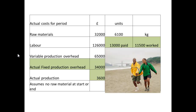Now let's look at the actual costs for the period. The actual fixed production overhead was £34,000, so obviously there is a difference. We need to be aware of two things: first, for labour, there were 13,000 paid hours but only 11,500 worked hours; and secondly, the actual production was 3,600 coats, not 3,000.